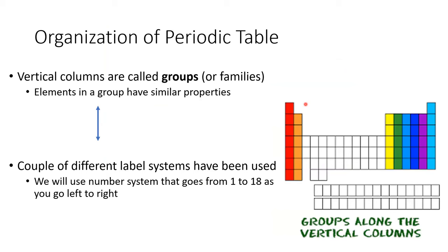With the periodic table, the columns going up and down — the vertical columns — we refer to as groups. These are where we see the same chemical properties. For example, group 17 elements all have similar chemical properties, whereas group 16 is different but everything within group 16 is similar to one another. You can think of them as families, like siblings — there are a lot of similarities, but they're not identical. We're not going to have exactly the same thing with every element in a particular group, but we'll have similarities in terms of properties.